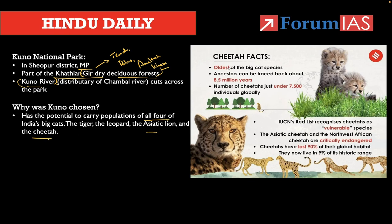Cheetahs are the oldest of the big cat species — their ancestors have been traced back about 8.5 million years. The number of cheetahs is just around 7,500 individuals globally; in India we have only 8 individuals. According to IUCN, cheetahs are listed as Vulnerable. Asiatic cheetahs and northwestern African cheetahs are listed as Critically Endangered. Throughout the world, cheetahs have lost almost 90% of their global habitat, and these 7,500 individuals live in only 9% of the historic range.